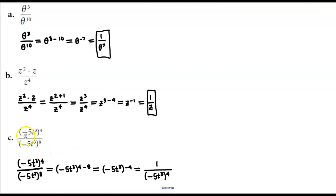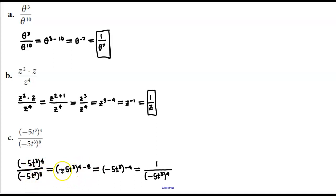In the next example, in the numerator we have a base of negative 5t to the third power raised to the fourth power, divided by the base of negative 5t to the third power to the power of 8. We have the same base and we're dividing them, so we're going to take that base and subtract the exponents. So we have negative 5t to the third power raised to the power of 4 minus 8, which becomes negative 5t to the third power raised to the power of negative 4.